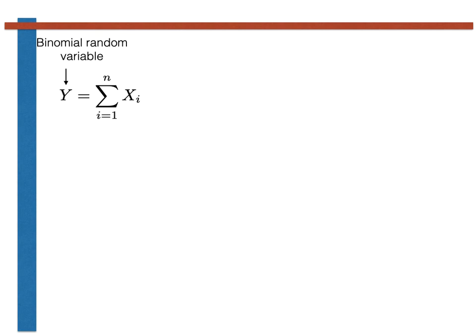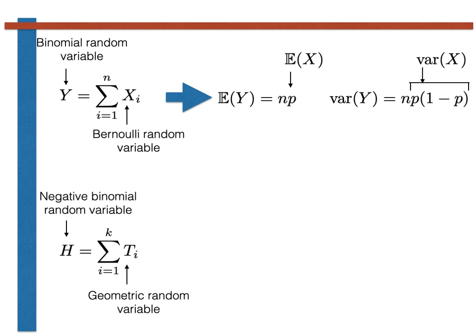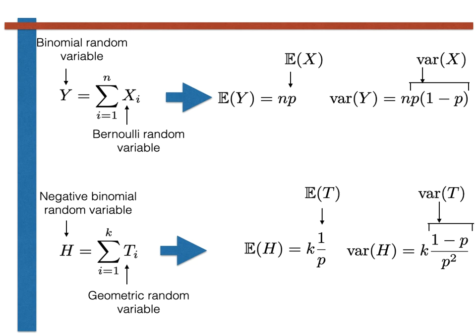To summarize then, it is easy to remember these expectations if you recall how these various types of random variables are related. A binomial random variable is a sum of n Bernoulli random variables. The expectation and variance of the binomial random variable are thus equal to the expectation and variance of the Bernoulli random variable p and p times 1 minus p, both of these expressions multiplied by n. Similarly, a negative binomial random variable is a sum of k geometric random variables. The expectation and variance of a geometric random variable are 1 over p and 1 minus p all over p squared, and thus the expectation and variance for the negative binomial random variable are equal to these two numbers multiplied by k.